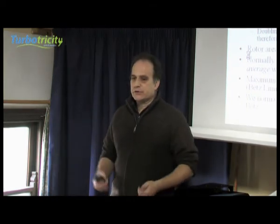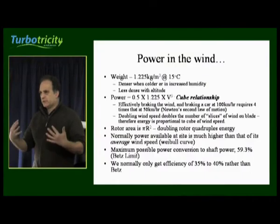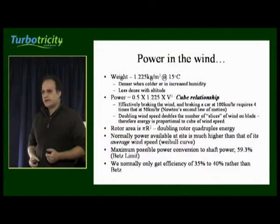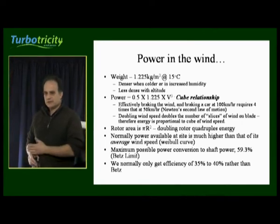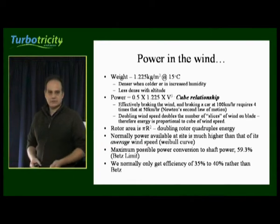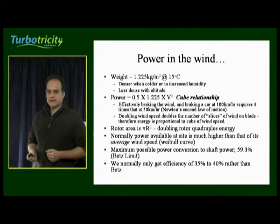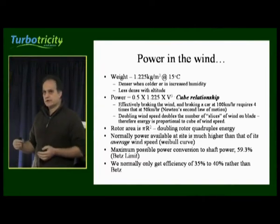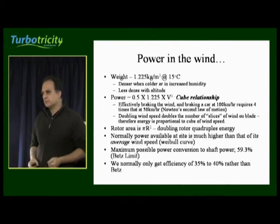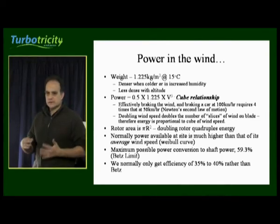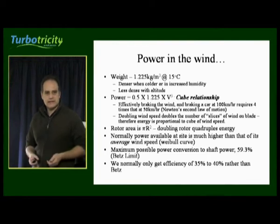Of the total energy going through the blades of a turbine, there's a certain theoretical maximum you can extract, known as the Betz limit. It would be a physical impossibility for a turbine to extract more than 59.3% of that energy. In practice, most wind turbines achieve a net efficiency of between 35 and 40%. If the blades are extremely well designed and the inverter is incredibly efficient, you can push that up to maybe 45%, but the Betz limit is the theoretical absolute maximum.